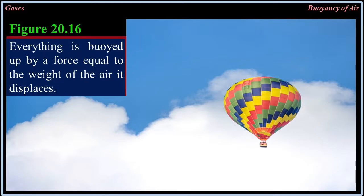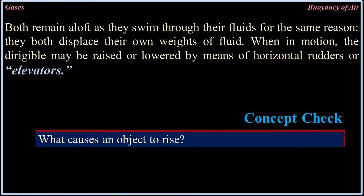When you next see a large dirigible airship aloft in the air, think of it as a giant fish. Everything is buoyed up by a force equal to the weight of the air it displaces — both a dirigible and a fish remain aloft as they swim through their fluids for the same reason: they both displace their own weight of fluid. When in motion, the dirigible may be raised or lowered by means of horizontal rudders or elevators.